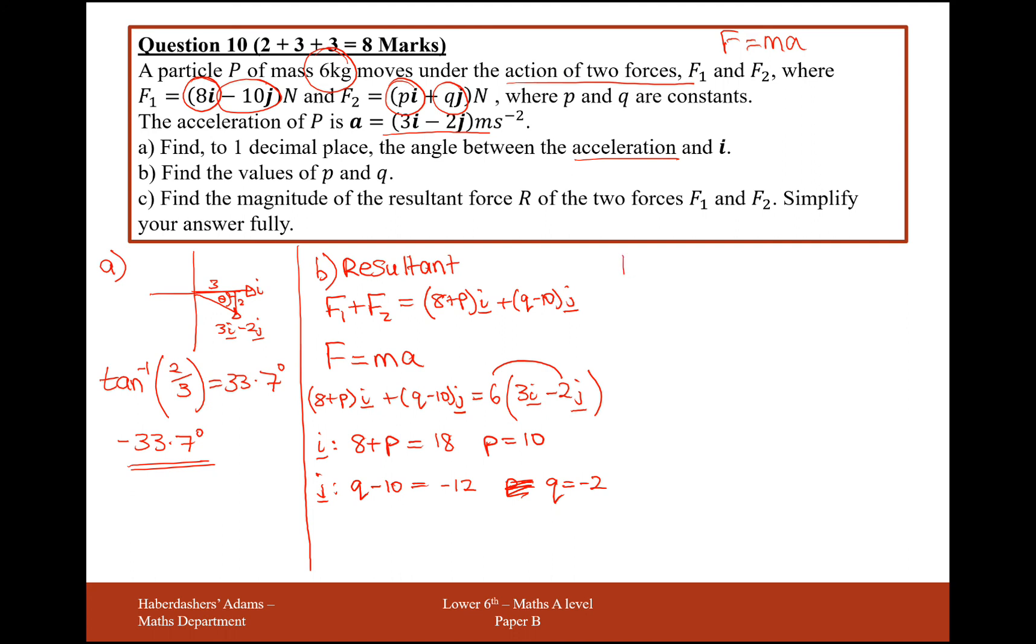So for part C, the question is, find the magnitude of the resultant force R of the two forces F1 and F2 to simplify your answers. Okay, so what we have to do here is first we have to work out what R is, and then we'll look at what the magnitude means. So R is going to be this vector here that we found, so it's going to be 8 plus P.